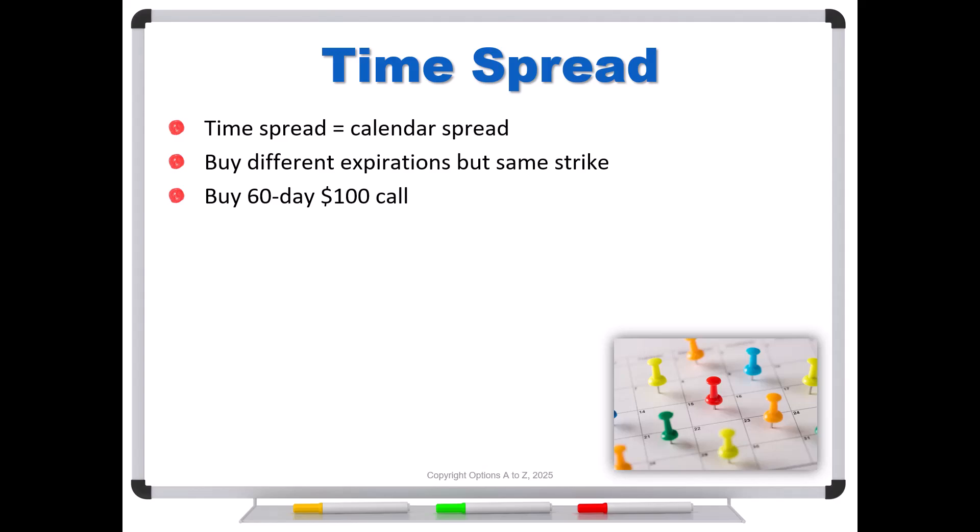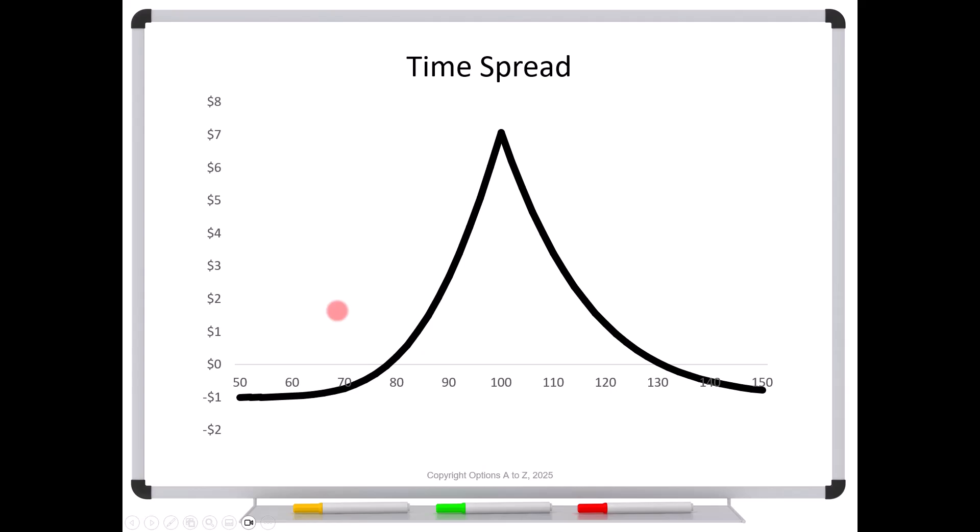So for instance, let's say that you buy a 60-day $100 call and you sell a 30-day $100 call. This is a calendar spread, and it would be a long one. We know that longer dated options, assuming the same strike, have to be worth more money. So since you're buying the longer dated option, this must be a debit spread. So it's a long spread. And again, we would just say that this is the 100 time spread or the 100 calendar spread.